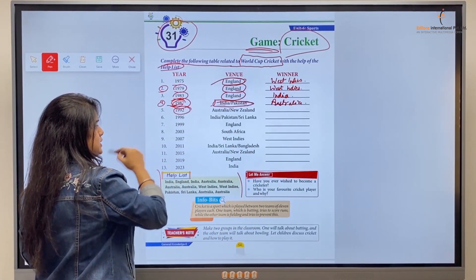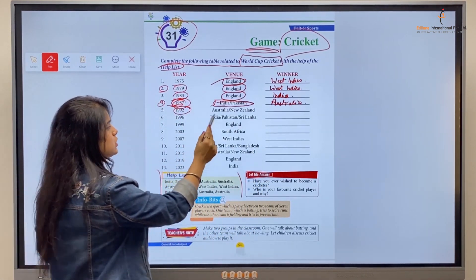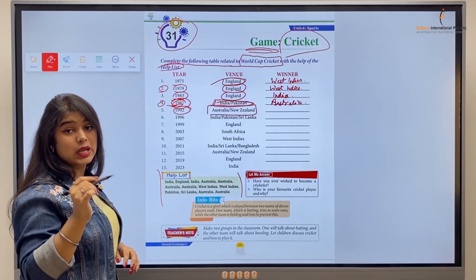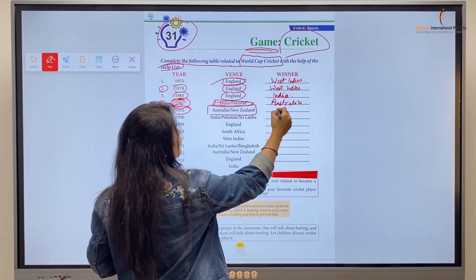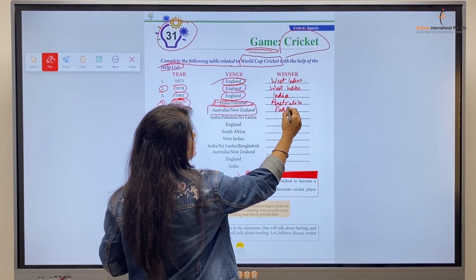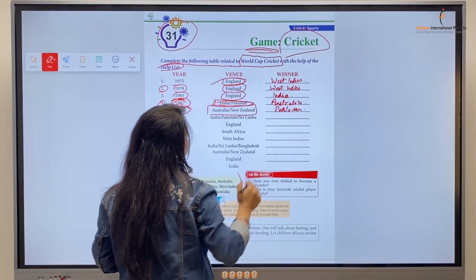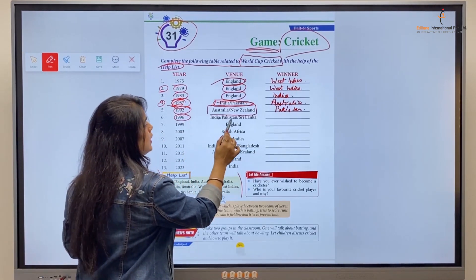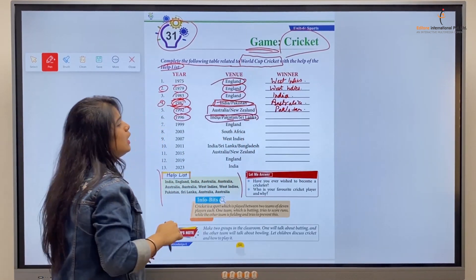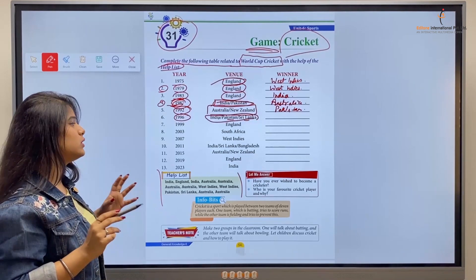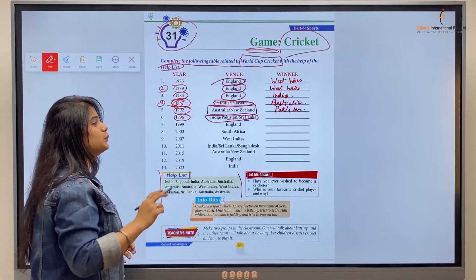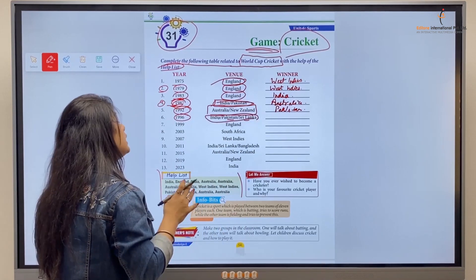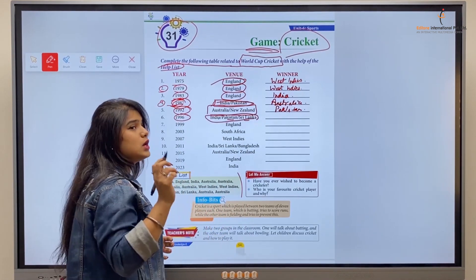Next is the 1992 World Cup which was held in Australia and New Zealand. The winner was Pakistan, so we'll write Pakistan. Next is the 1996 World Cup. The venue was India, Pakistan, and Sri Lanka, and the winner of this World Cup was, yes that's correct kids, the team Sri Lanka.